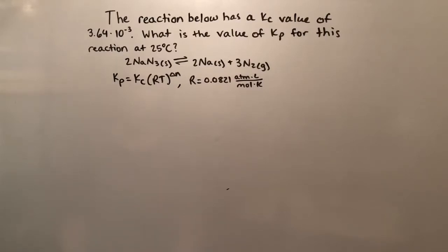2 NaN3 solid yields 2 Na solid plus 3 N2 gas. And we're given the Kp equation. Kp equals Kc times RT to the change in N, where R is 0.0821 atm times liters over mole times Kelvin.